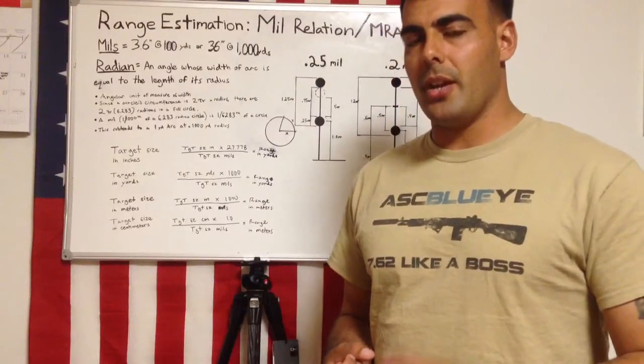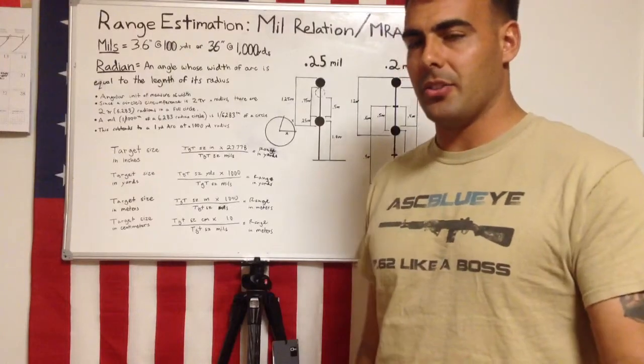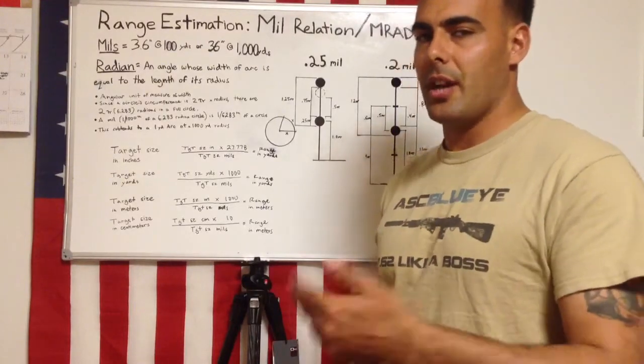There are 6.283 radians, because the circumference of a circle is 2 pi, which is 6.283 times its radius.